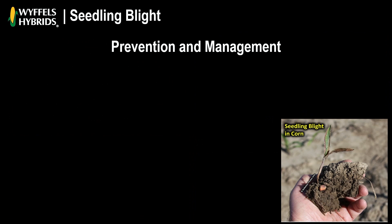Now that we've talked about how to identify seedling blight, let's cover how to prevent and manage it. One thing is to use a multiple mode-of-action seed treatment such as Acceleron, which will help prevent a lot of your seedling blight.